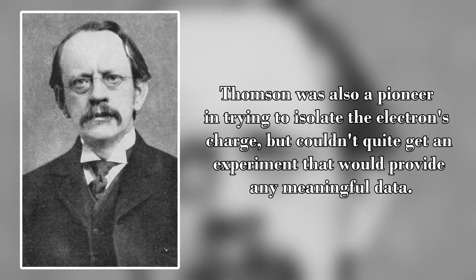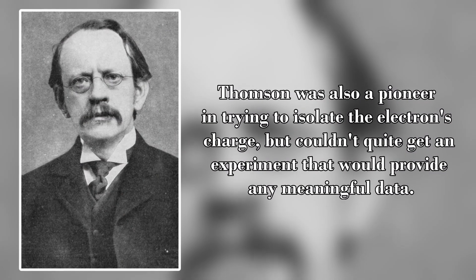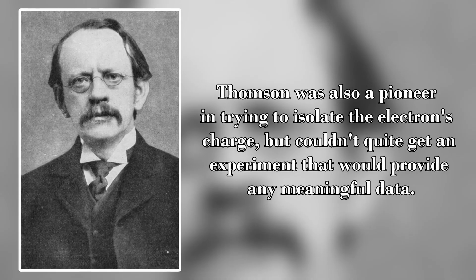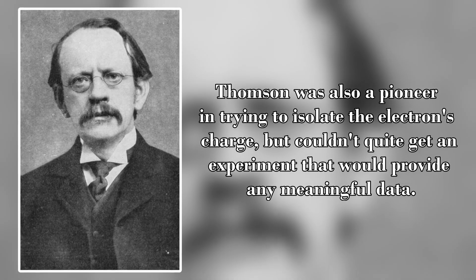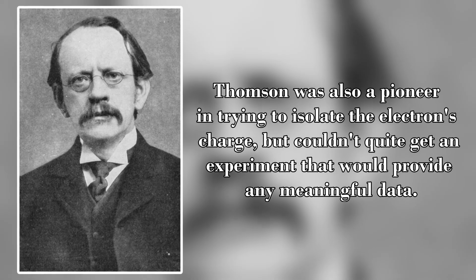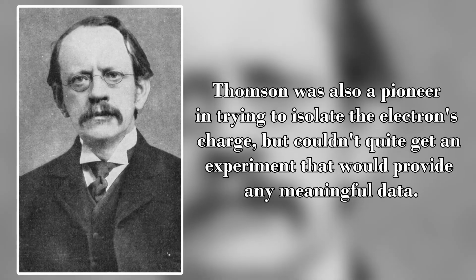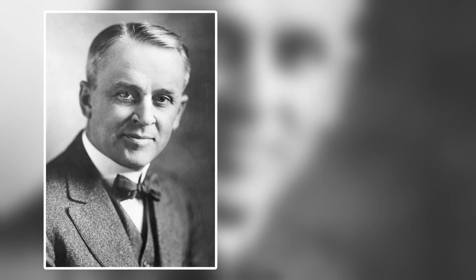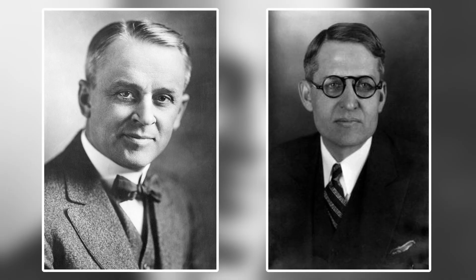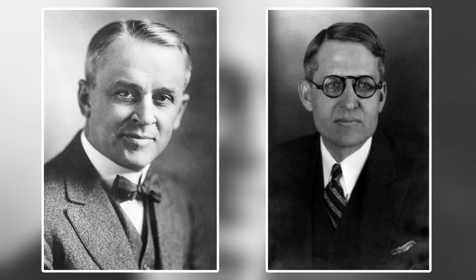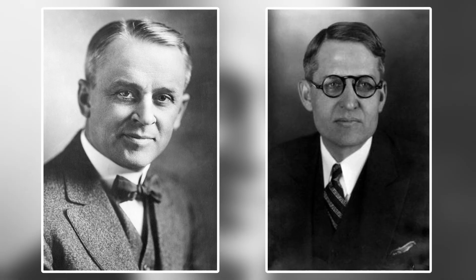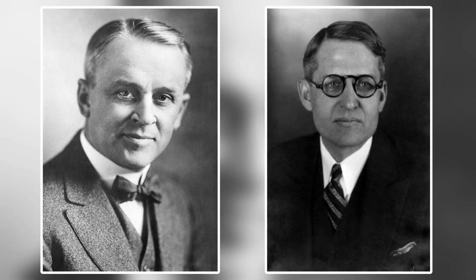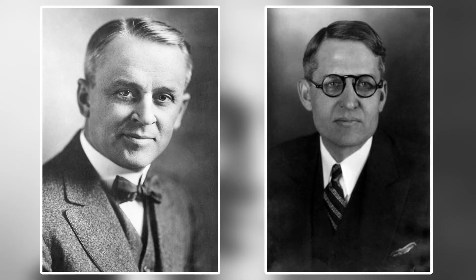Experiments were set up shortly after to try and isolate the charge from the ratio, but estimates weren't nearly as accurate as scientists would have liked. It wasn't until 1909 when a physicist by the name of Robert Millikan and his PhD student Harvey Fletcher put their names into the experiment that a precise measurement of the charge of the electron was made.